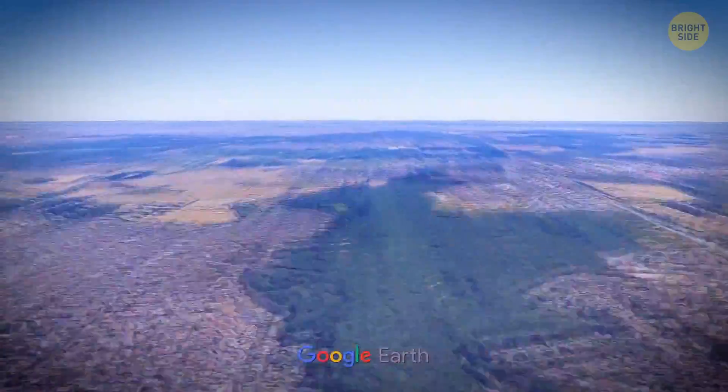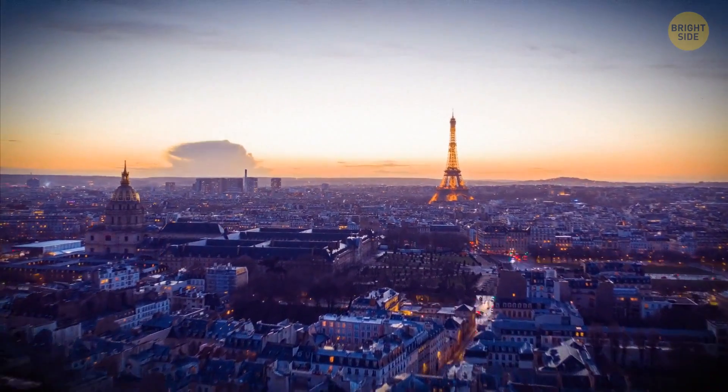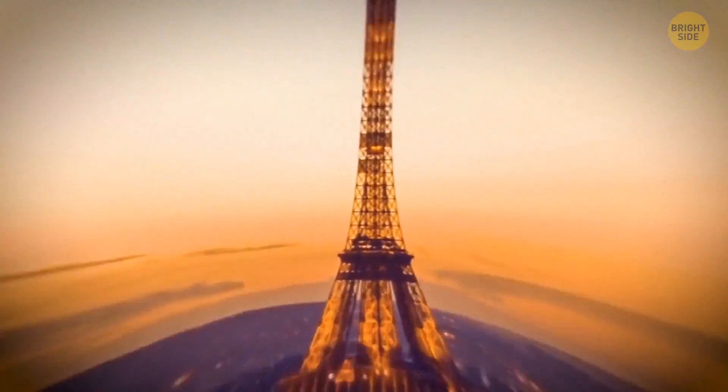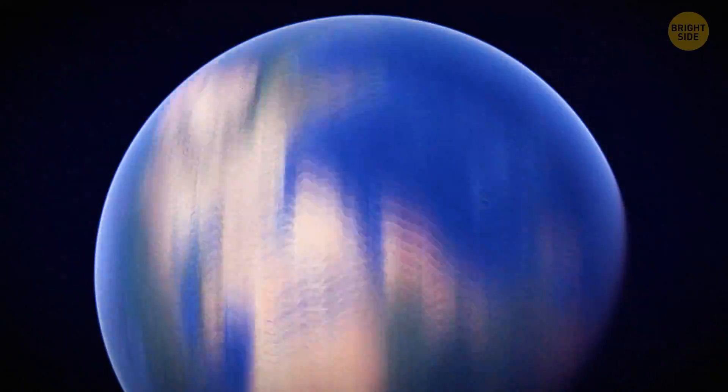The world would appear distorted, with buildings and landmarks merging into streaks of brilliance as you zip past them. The familiar features of cities would become blurred colors, blending together in a mesmerizing display. Day and night would blend seamlessly, since Earth's rotation would become an indistinguishable whirlwind.